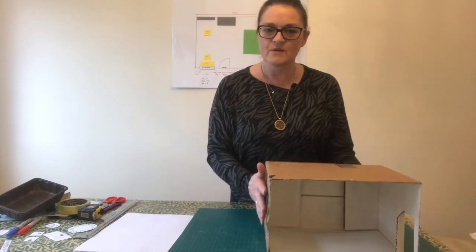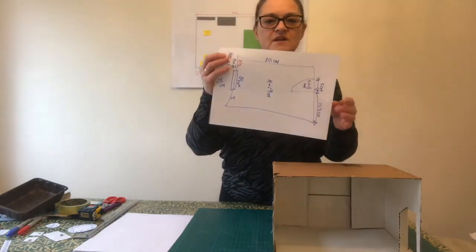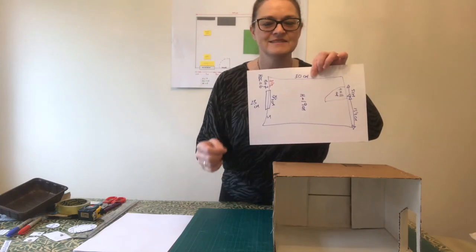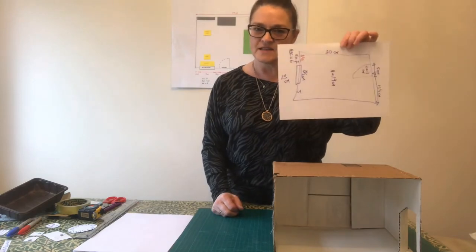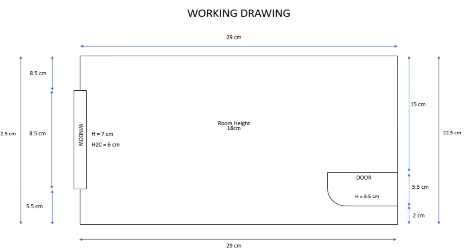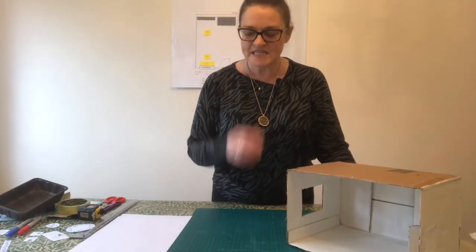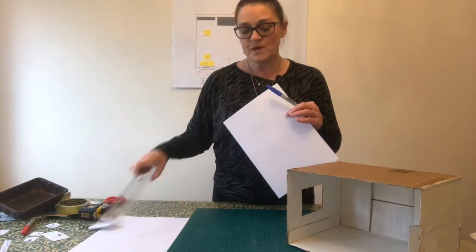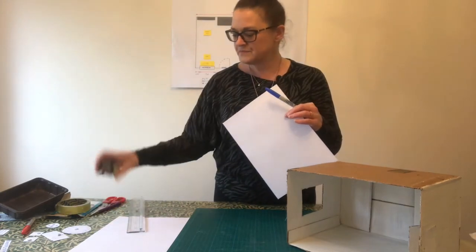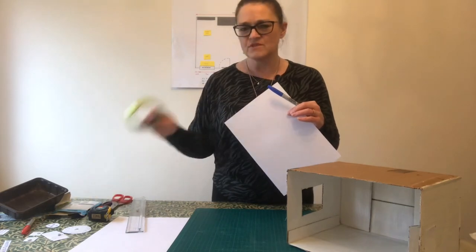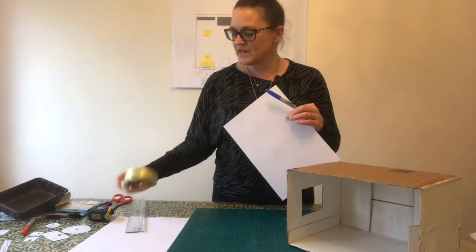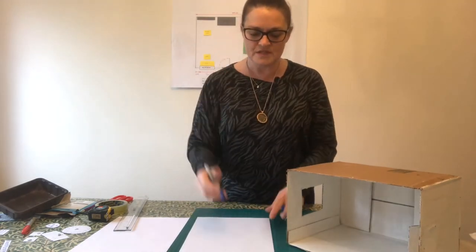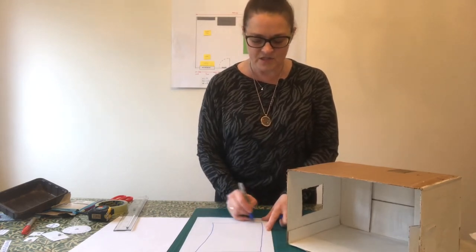My working drawing would look something like this — I've got the door over here, the window over here, and lots of measurements. To get to that stage, put your box to one side. You'll need a piece of paper, a pen — I'm using a felt tip so it's easier for you to see — maybe a ruler or tape measure, a pair of scissors, and something round like the inside of a sellotape roll. The first thing is to draw the shape of the box, so this is a rectangle. It's a working drawing, so it's not actually to the right size at the moment.